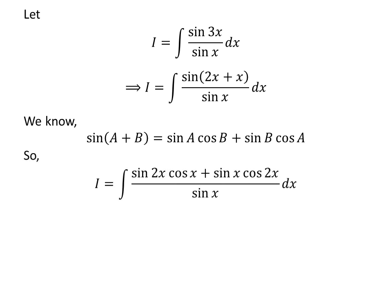So I is equal to the integral of sin(2x)cos(x) plus sin(x)cos(2x), all upon sin(x). We apply the trigonometric identity sin(2x) = 2sin(x)cos(x).